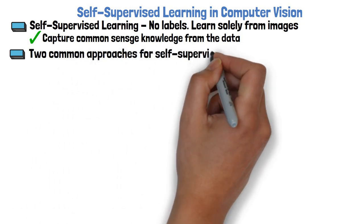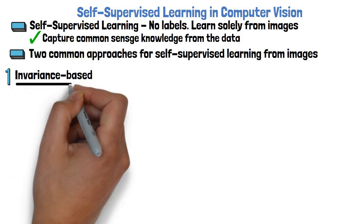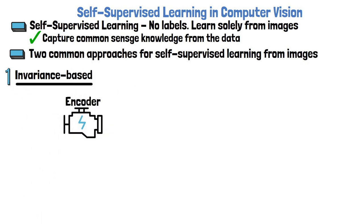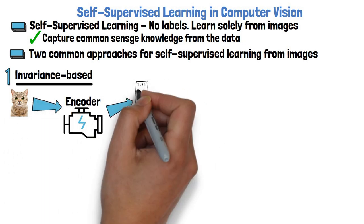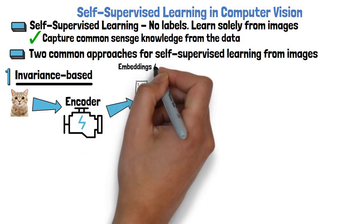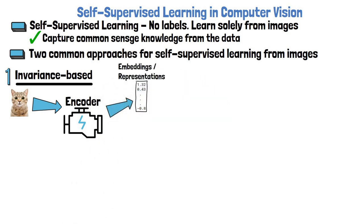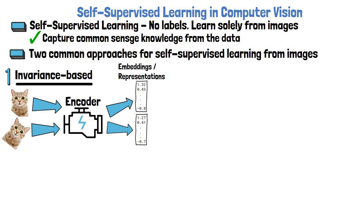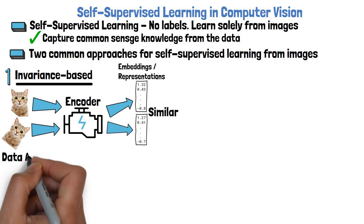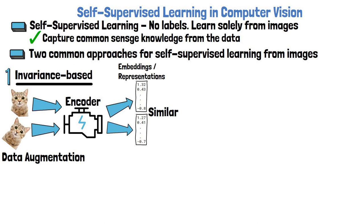There are two common approaches for self-supervised learning from images. The first is invariance-based, where we train an encoder to receive an image input, such as a cat image, and produce a vector of numbers representing the semantics of the image — called embeddings or representations. During training we present the model similar images, such as a rotated cat, and optimize the encoder to yield similar embeddings for both, since they have similar semantic meaning. Embeddings of incompatible images are trained to be dissimilar. Different views are created using hand-crafted data augmentation techniques such as geometric transformations, coloring, and more.